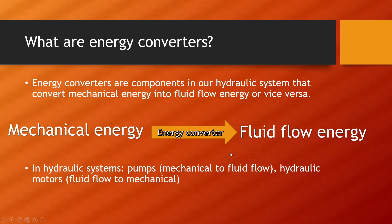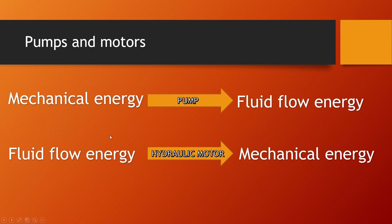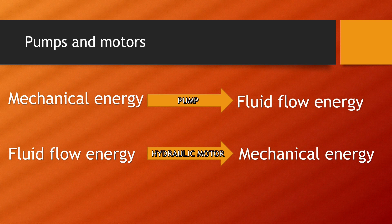That basically means that we have pumps and hydraulic motors — pumps and hydraulic motors are our energy converters. Pumps are the converters that convert mechanical energy into fluid flow energy, and hydraulic motors convert fluid flow energy into mechanical energy. Pumps are usually at the beginning of our system, right after the electric motor that drives them, and hydraulic motors are usually at the end of the system doing work through a hydraulic cylinder actuator or hydraulic motor.